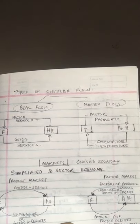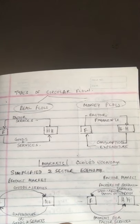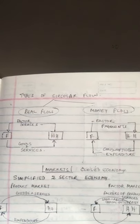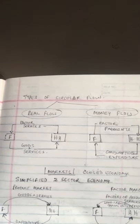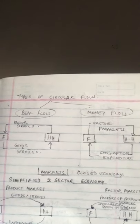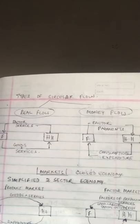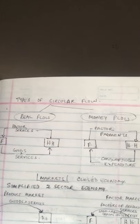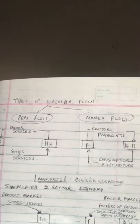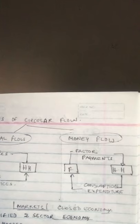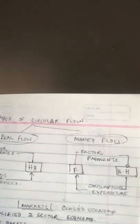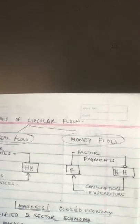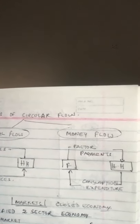In the real flow, it's all to do with factor services — land, labor, capital, and enterprise — tangible inputs being turned into tangible goods and services. In the money flow, firms pay households incomes for those factor services; it is a cost to the firms. The money the households receive is then spent on consumption — buying those goods and services. That is what is known as the real flow and the money flow.